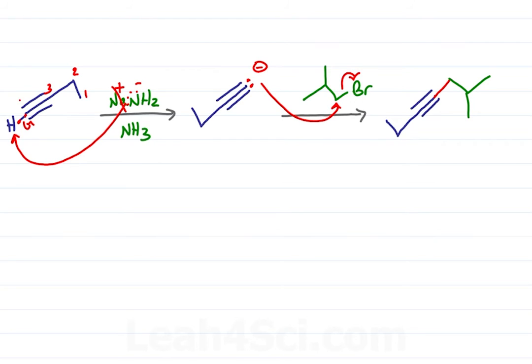We have four carbons in our starting alkyne. That's one, two, three, four. A new bond forming between the alkyne and what we'll label five, six, seven, with a methyl group on six.